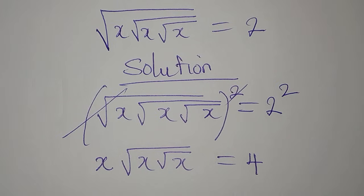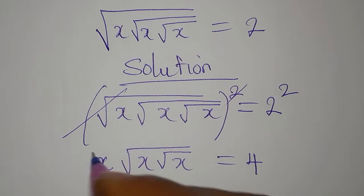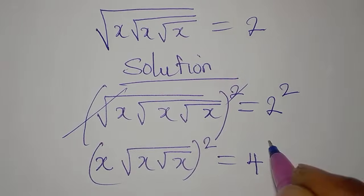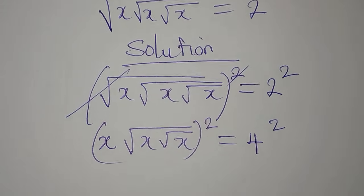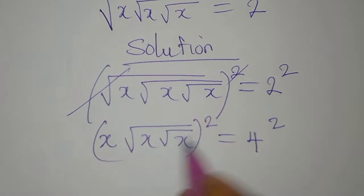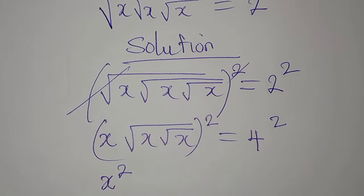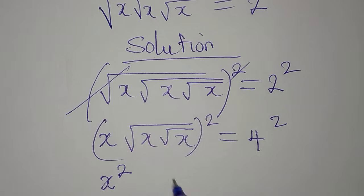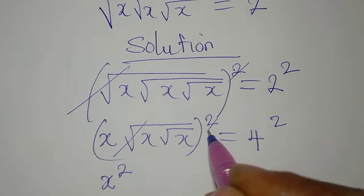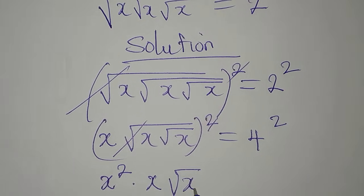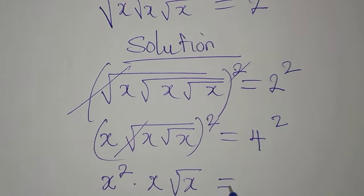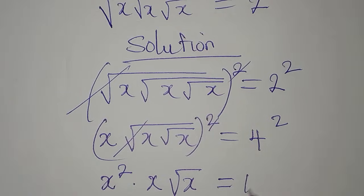Because we still have roots, we are going to square again. If you square one side you must square the other side. So x squared comes down, and after simplification we still have root x remaining, and this is equal to 4 squared, which is 16.